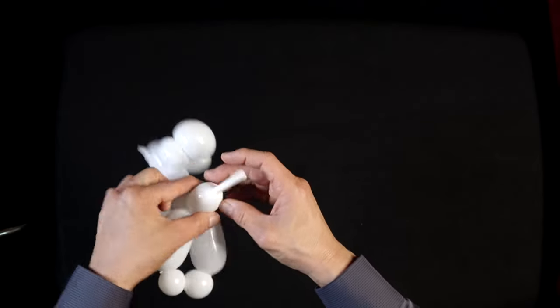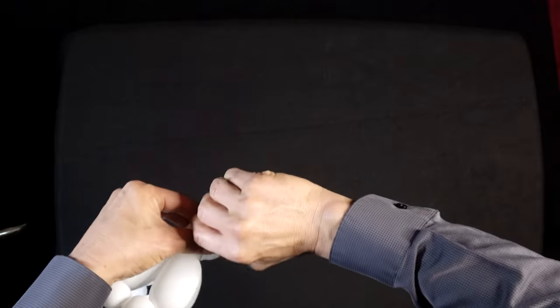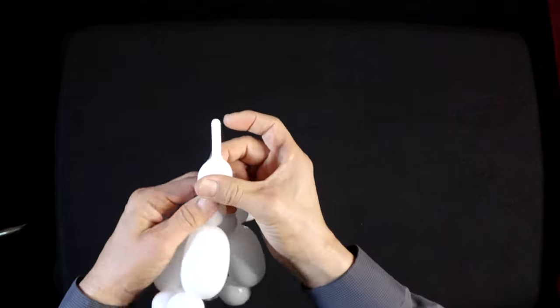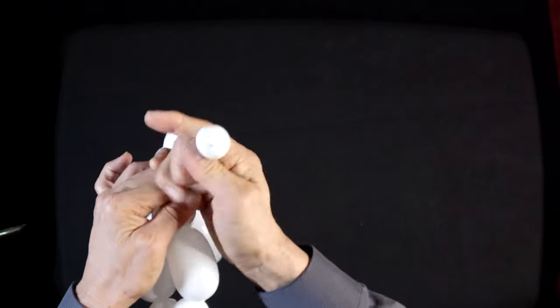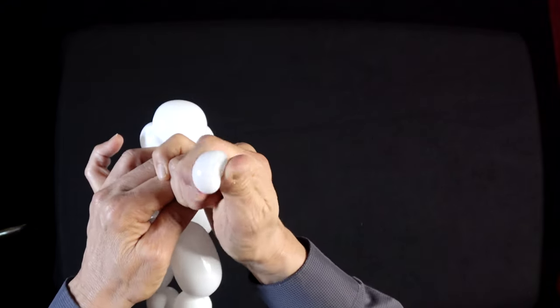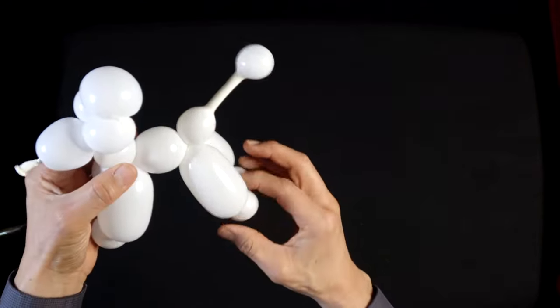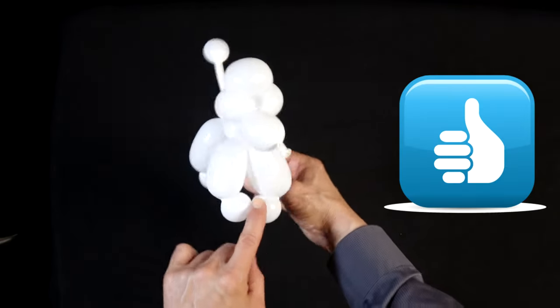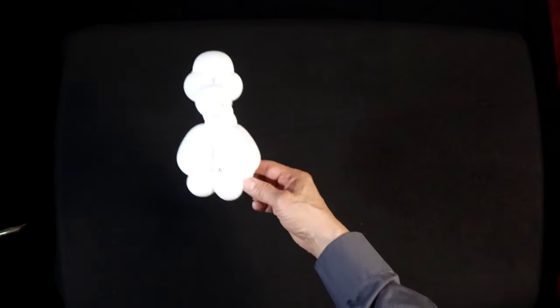The final detail is to pinch this in half and move this, squeeze it all the way to the end of the tail. There you have it - a poodle balloon.